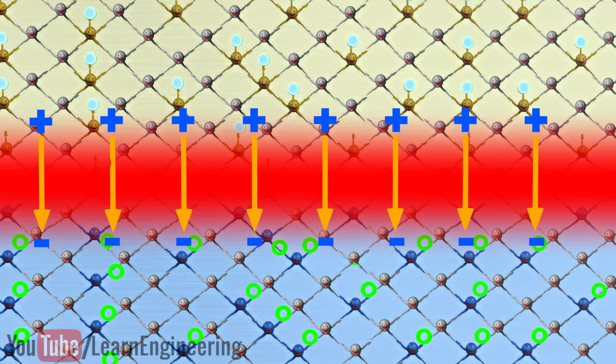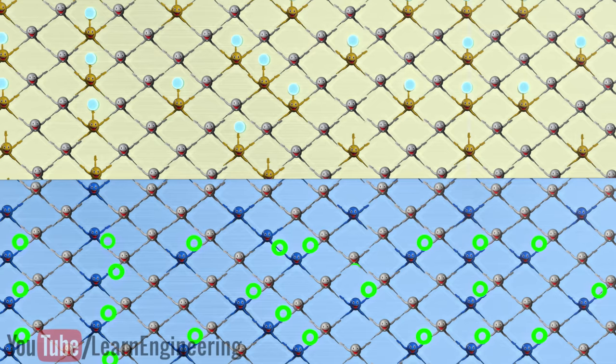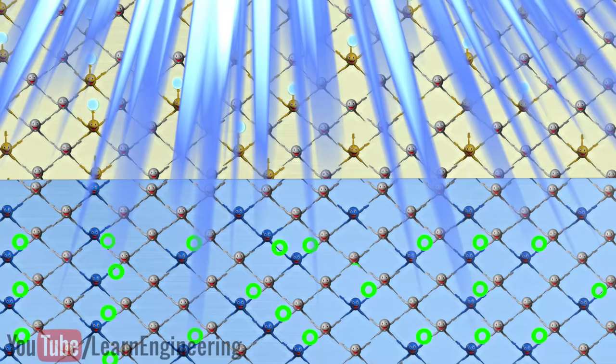An electric field will definitely be formed between these charges. This electric field produces the necessary driving force. When the light strikes the P-N junction, something very interesting happens. Light strikes the N region of the PV cell and it penetrates and reaches up to the depletion region.